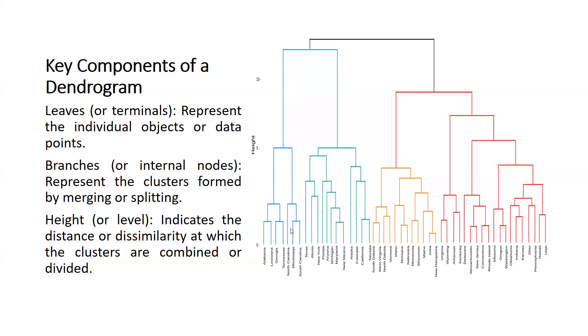Height or levels - we can call it height or we can call it level. These levels indicate the distance or dissimilarity at which the clusters are combined or divided. It is reflecting dissimilarities or distance from which the clusters are combined or divided.